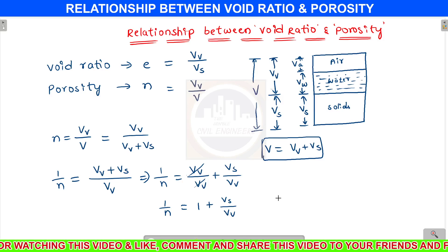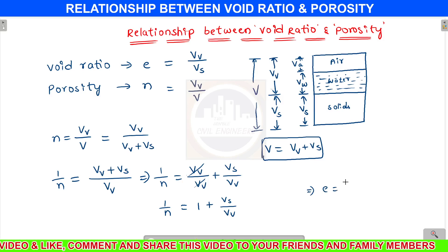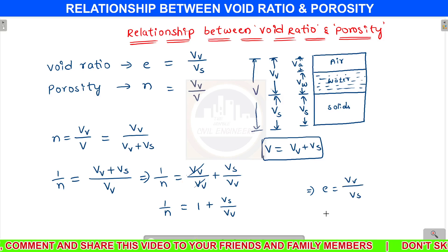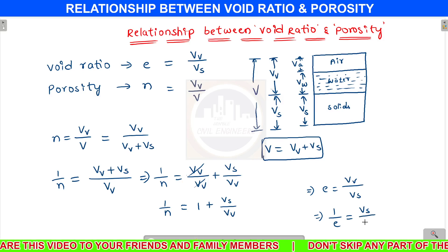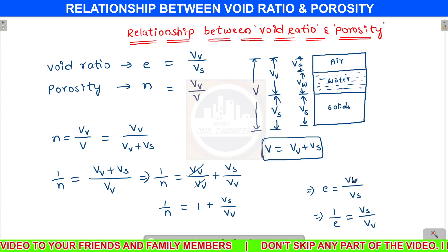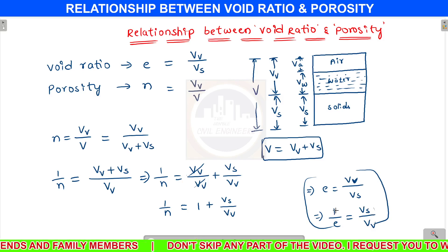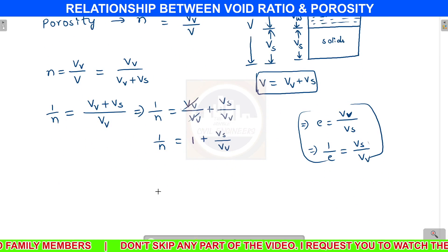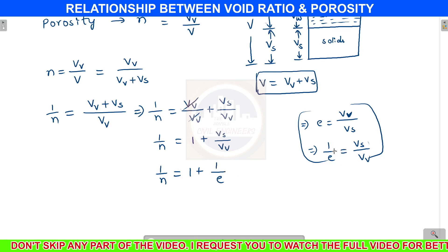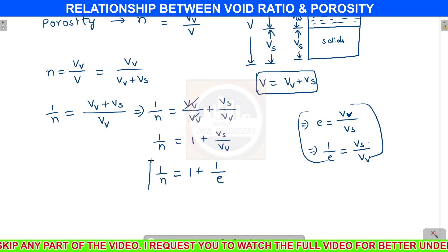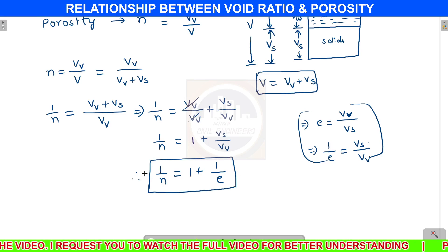Here, Vs/Vv is the inverse of void ratio, because void ratio e equals Vv/Vs, so 1/e equals Vs/Vv. Therefore, substituting, 1/n equals 1 plus 1/e. This is the basic relationship between n and e.